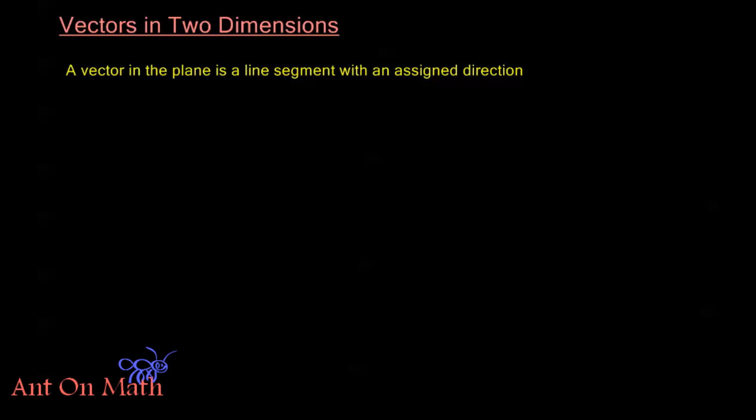We define a vector in the plane to be a line segment with an assigned direction. So, for example, let's say I have this point A and this point B.